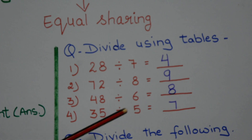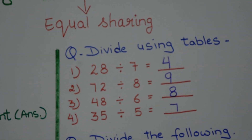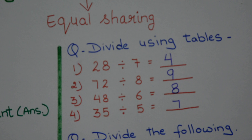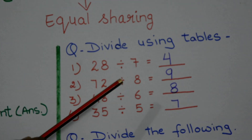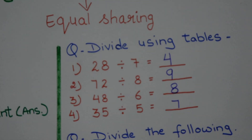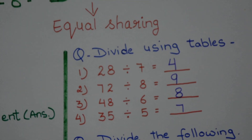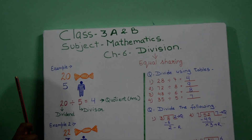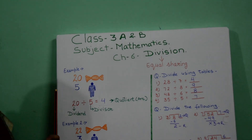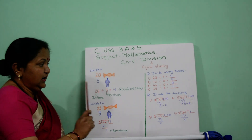Now children, these types of sums you will get in your mental maths paper. For this you have to learn your tables by heart — tables up to 15, you have to learn them by heart.